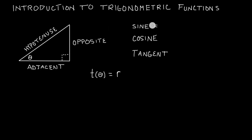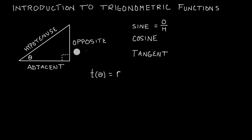If we were to look at the sine of some angle, what we're really looking at is the relationship between the opposite side of our angle and the hypotenuse. So the sine of some angle is equal to the opposite side divided by the hypotenuse. For our example here, the value of sine theta is equal to the length of this side divided by the length of the hypotenuse. The standard way to write sine of theta is SIN and then we take an argument of theta. So sine of theta is equal to the side of the triangle that is opposite of theta divided by the hypotenuse.